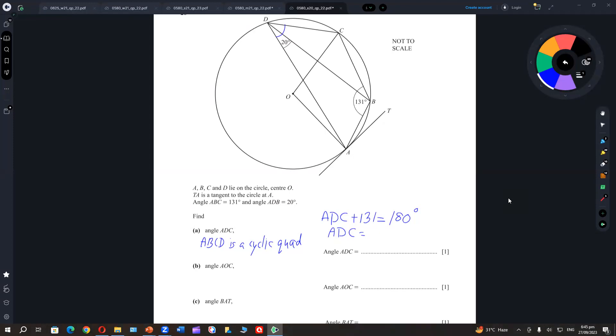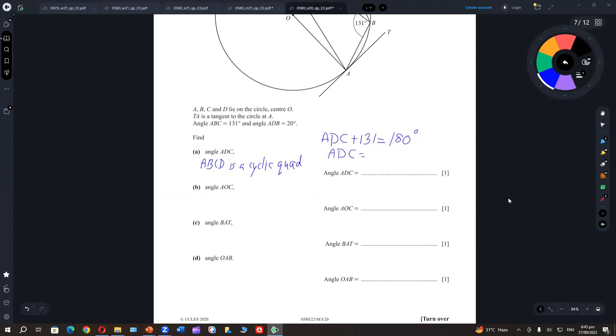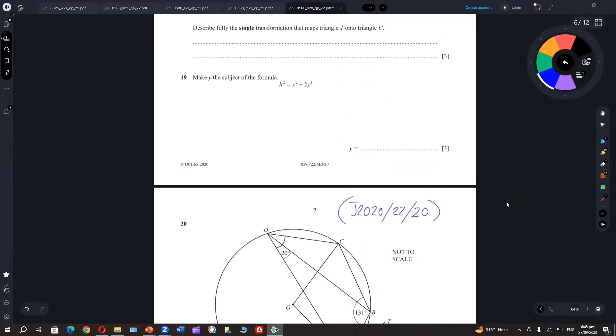What is 180 minus 131? 180 minus... is 49, 49 or 39?